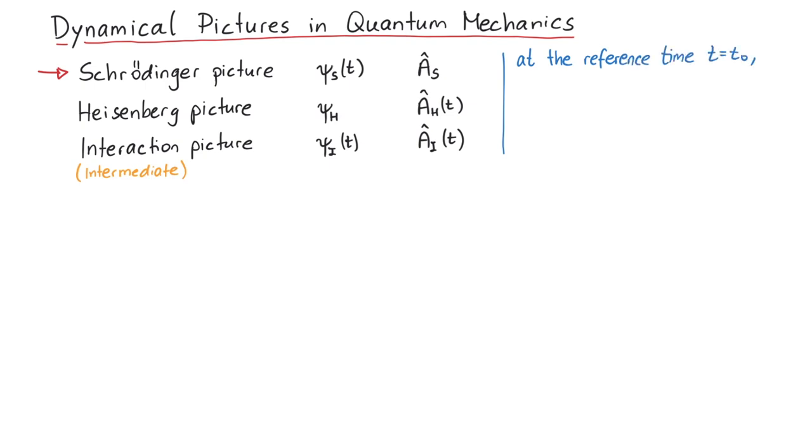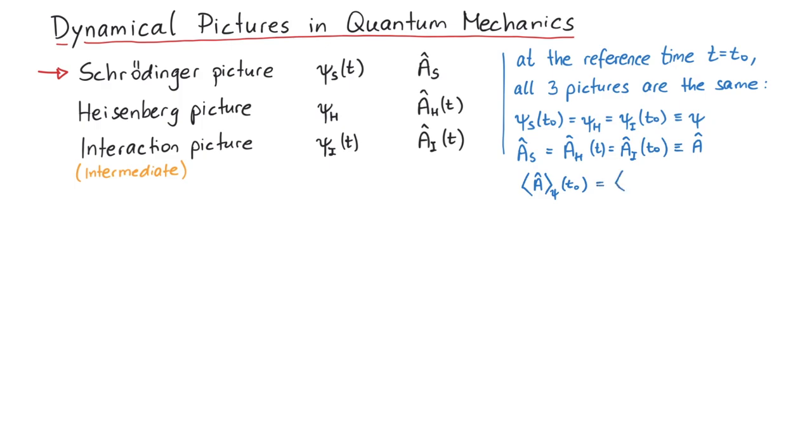Let us start by considering some state psi at a reference time t0. We also have an operator a, and want to calculate the expectation value in the state psi. At the time t0, the expectation value is psi a psi. So now, let's see how time evolution changes things.